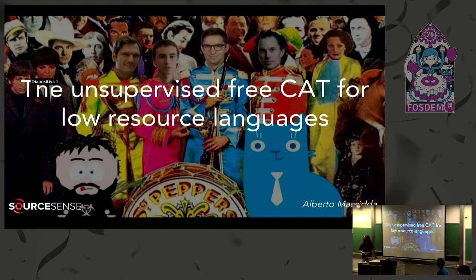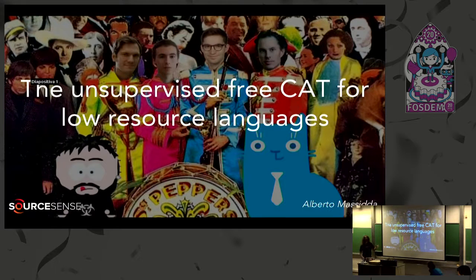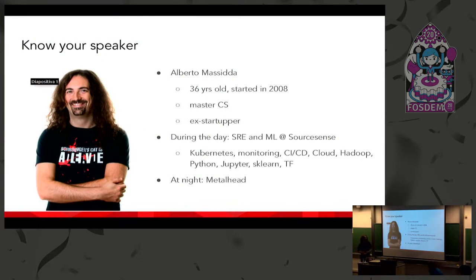Good afternoon. Thank you for joining this session. My name is Alberto and today we are going to talk about unsupervised free CAT — not the animal, but the software, as we call it in the translation industry: the software to translate. I'm 36 years old, started working more than 10 years ago, have a master's in computer science, and have worked most of my career in startups. During the day I look after the SRE in the DevOps business unit of SourceSense, and I'm also a machine learning manager for the unit.